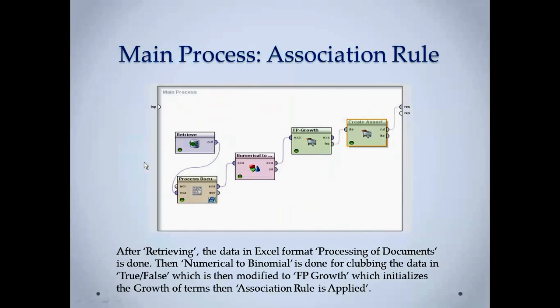Association rule shows in the main process like if we retrieve the data, go to process documents, we can apply three more operators like numerical to binomial, FP growth and create association. It changes the data into true and false. Whether the word is there, it is true. If it is not there, then it is false. FP growth initializes the growth of terms and create association creates association rules.